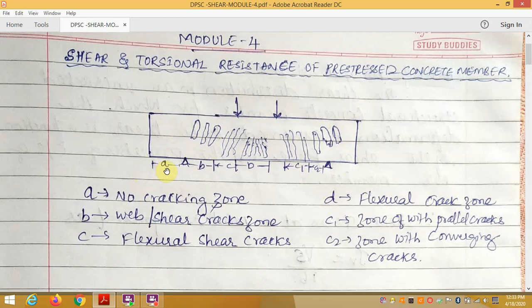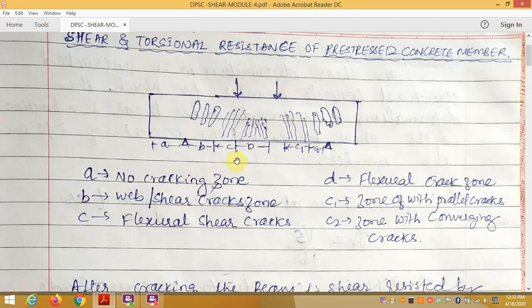In this figure, we have made different sections like A, B, C, D, C1, C2. In this A portion, from here to here, there are no cracks. It is called the no cracking zone. From end of A to B, it is called web shear cracks.